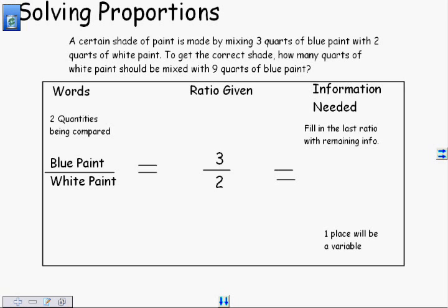Now that we've written down the ratio that's given, you're going to need to write down the information that's needed. The last part is to identify what we're solving for. You're going to fill in the last ratio with the remaining info. One place will be a variable, because you're looking for an answer. There's going to be an X or a Y or a P or a Q, whatever variable they've decided or you've decided to use.